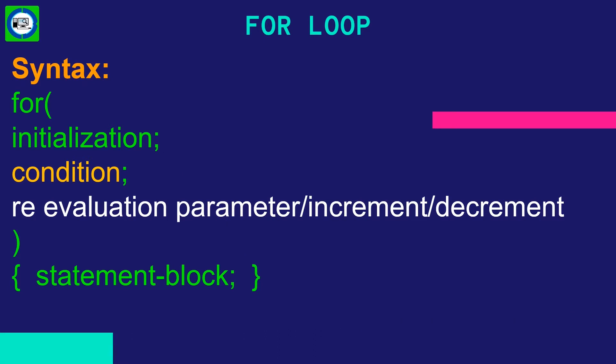The test condition is a relational expression that determines the number of iterations desired, or determines when to exit from the loop. The re-evolution parameter decides how to make changes in the loop.